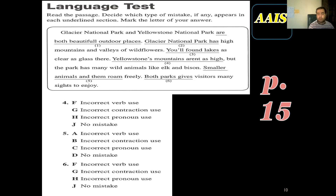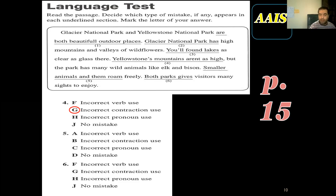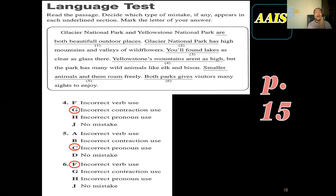Number four: 'Yellowstone's mountains aren't as high.' There is something wrong here — 'aren't' is missing an apostrophe. This is an incorrect contraction, because 'aren't' is the contracted form of 'are not.' Instead of two words, we write one. Number five: 'smaller animals roam and them' — this is an incorrect pronoun use; I used the wrong pronoun in a place where it shouldn't appear. And the last one: 'both parks gives' — I can't say 'gives' here; it should be 'give,' because 'both parks' is plural.